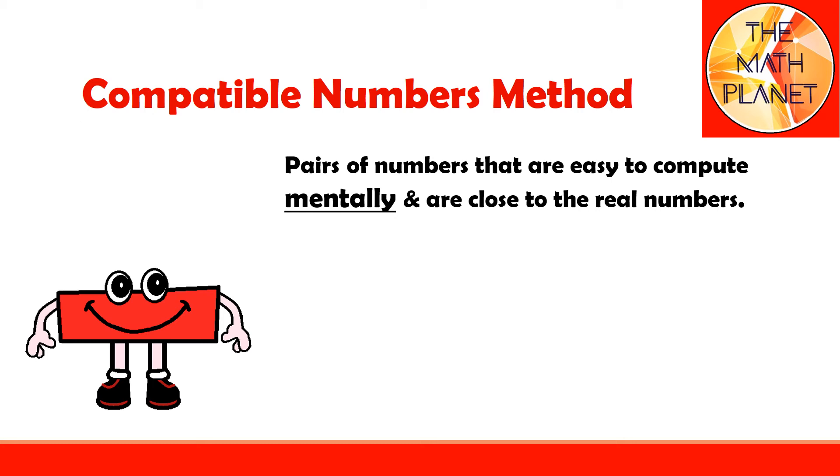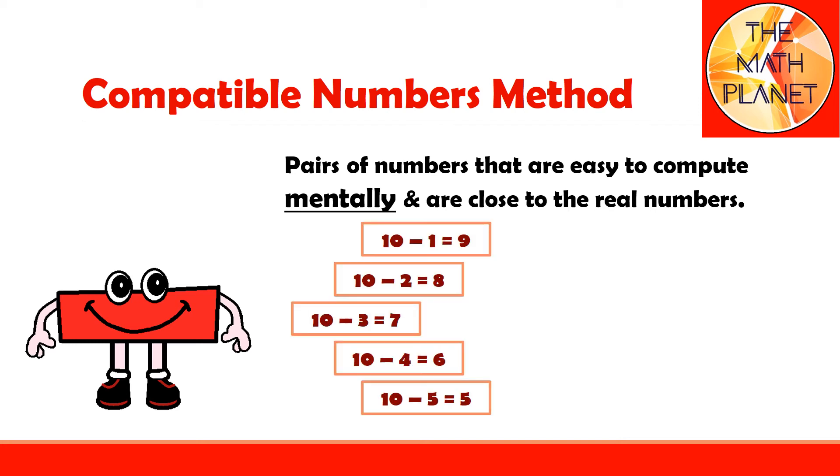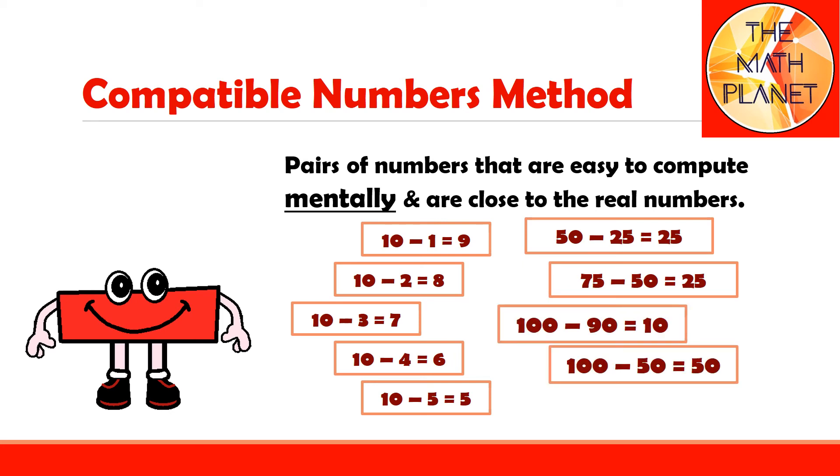So we need to think of numbers that are close to the numbers in our subtraction equation, and these numbers should be easy to subtract mentally, such as pairs of 10. And since we are dealing with 3-digit numbers, we can also think of pairs of 50 or pairs of 75 or pairs of 100 or even pairs of 150.